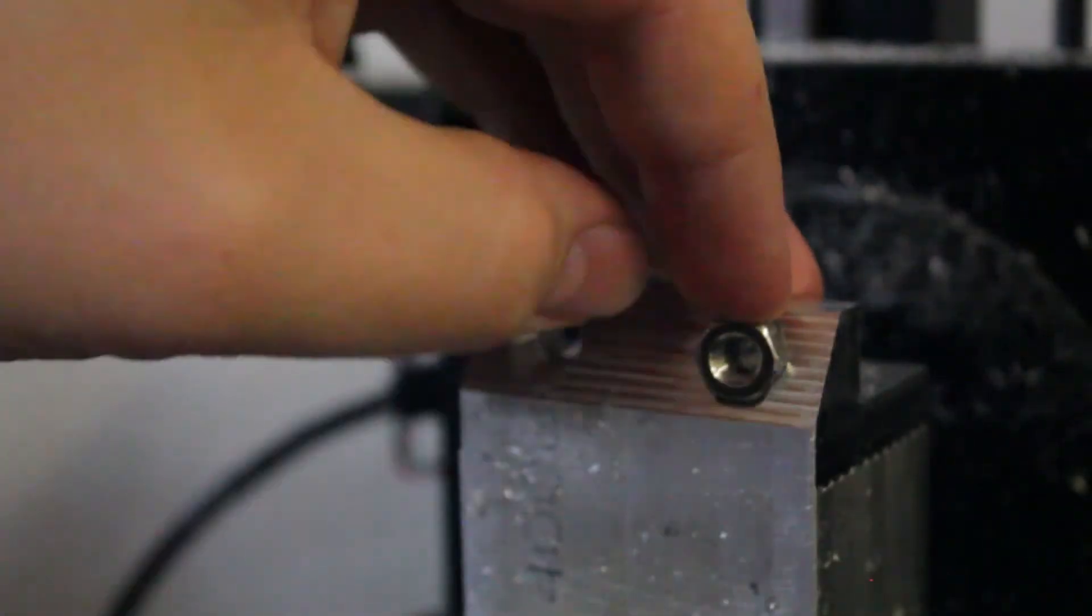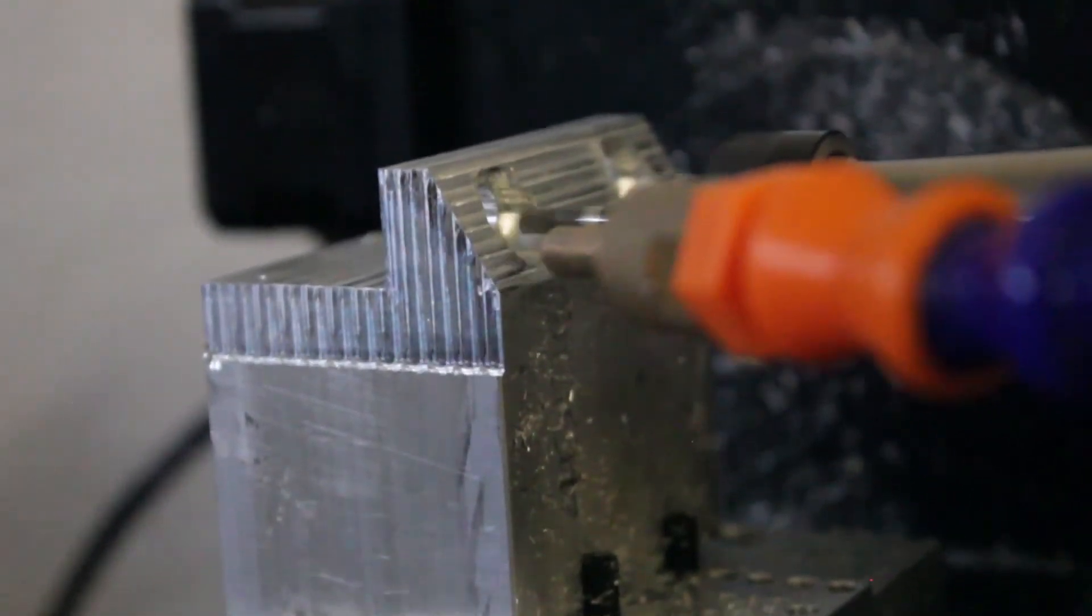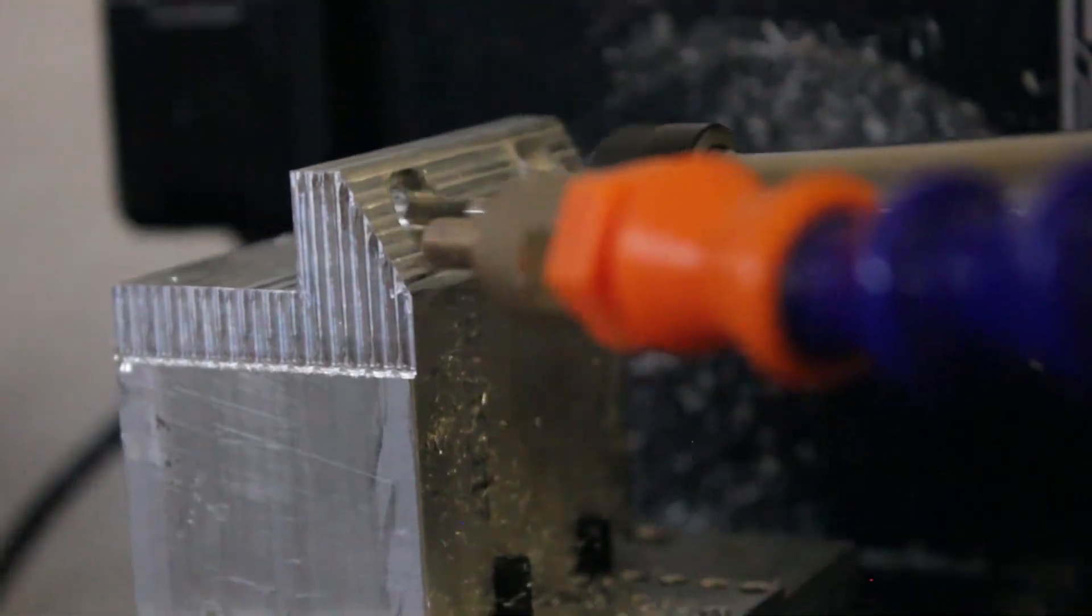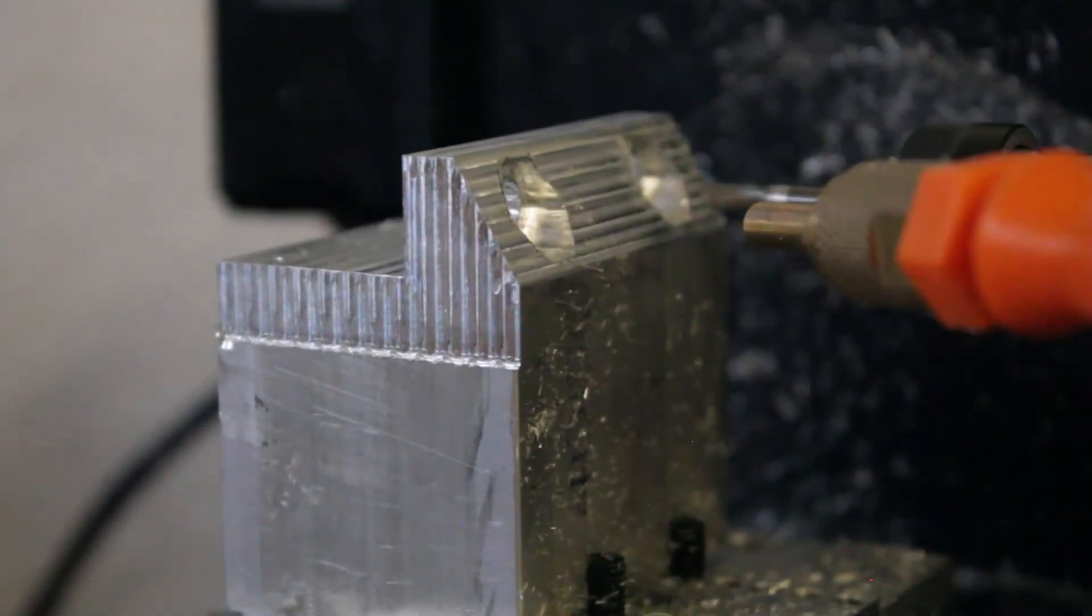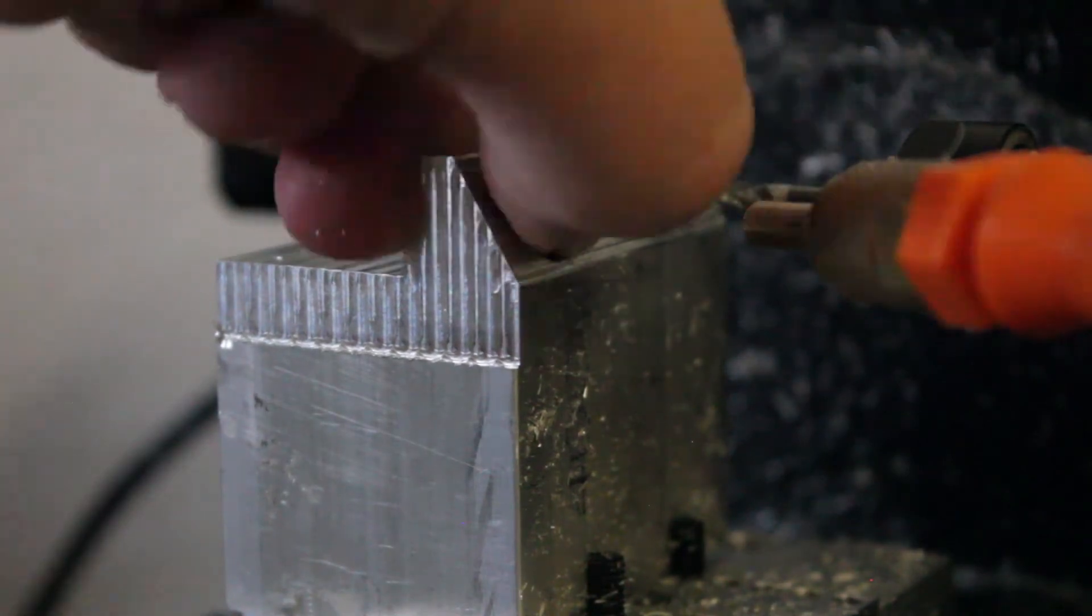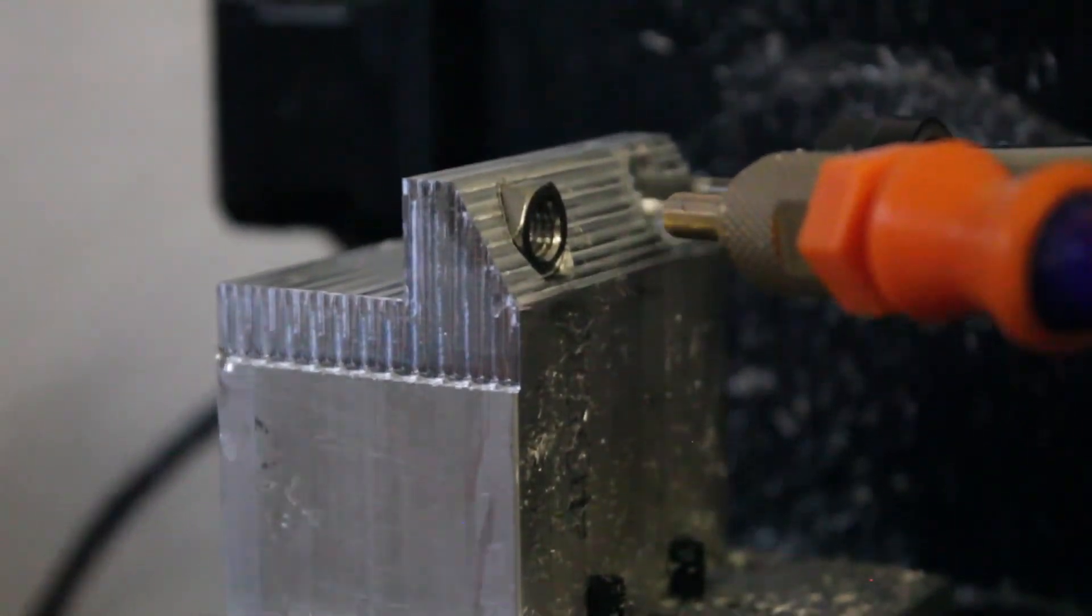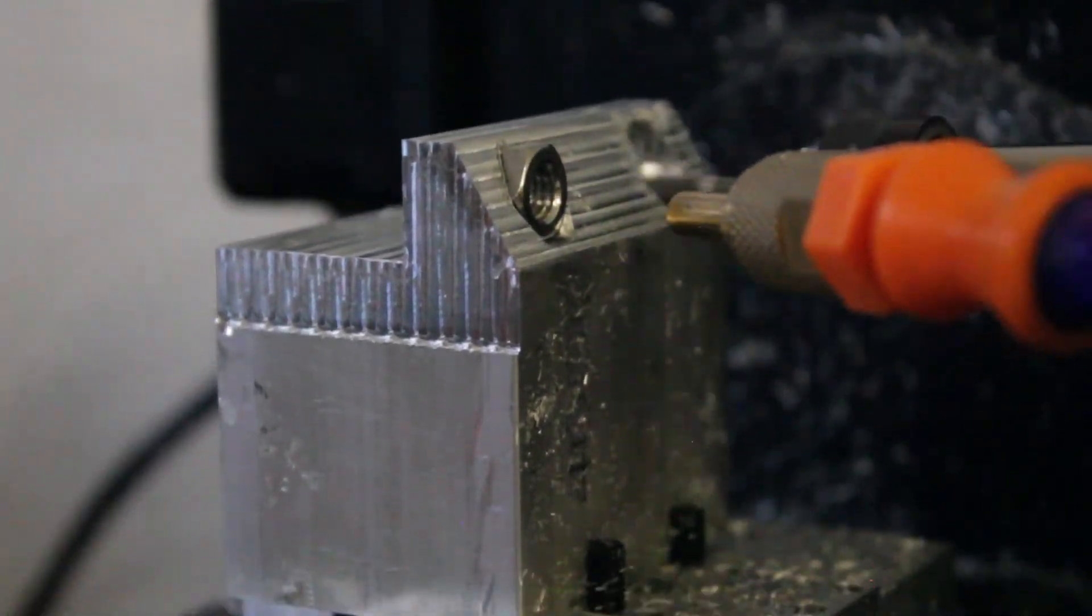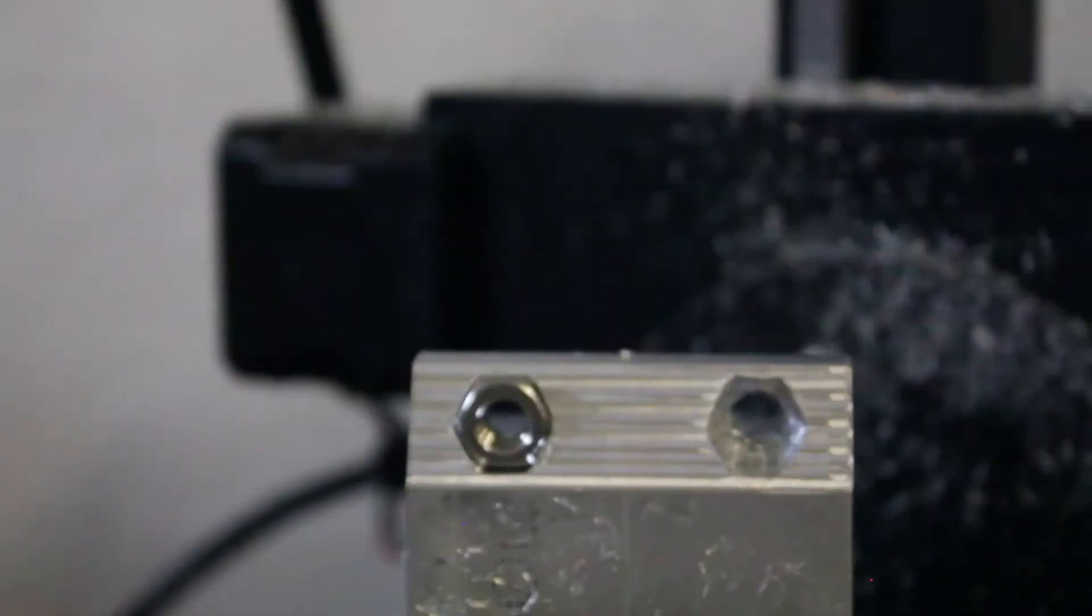I went ahead and machined the other features as well off-camera just as it felt like it was getting a bit boring. Those consisted of some pocket toolpaths coming in from the different faces, and then to finish everything off I did some parallel passes on each of the sides for the hexagon shapes where the nuts would sit.